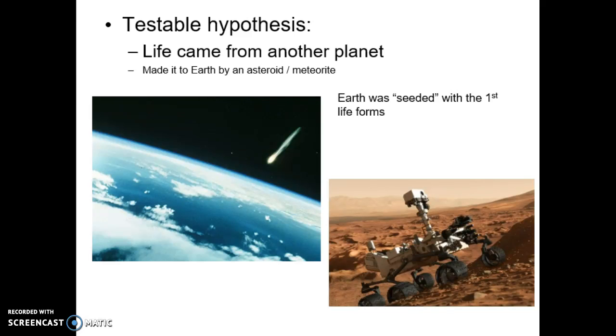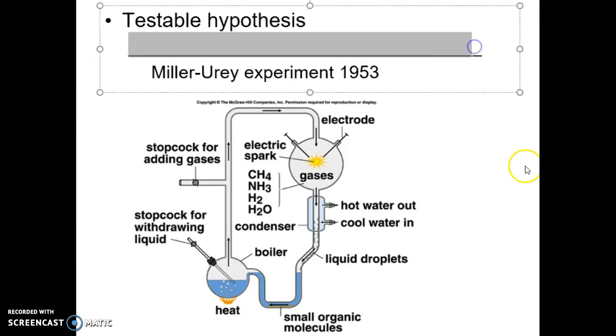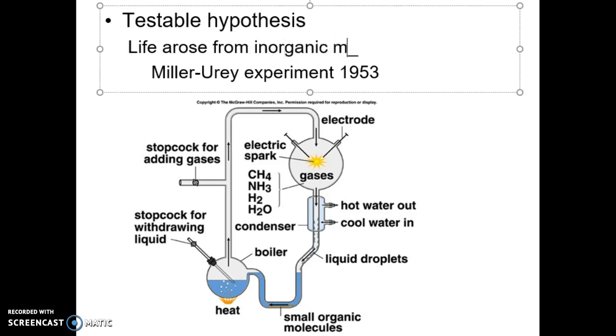Here's another testable hypothesis. Did life arise from inorganic matter? So back in 1953, same year Watson and Crick are discovering and cracking the DNA code, Miller and Urey designed an experiment to see, is it possible life originated this way? So let's look at what early Earth might have looked like. Gases, water, ammonium, methane, hydrogen. These various components are believed to have been in the early Earth's atmosphere.